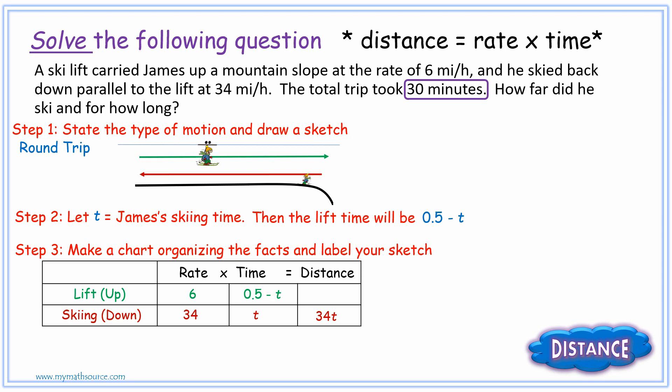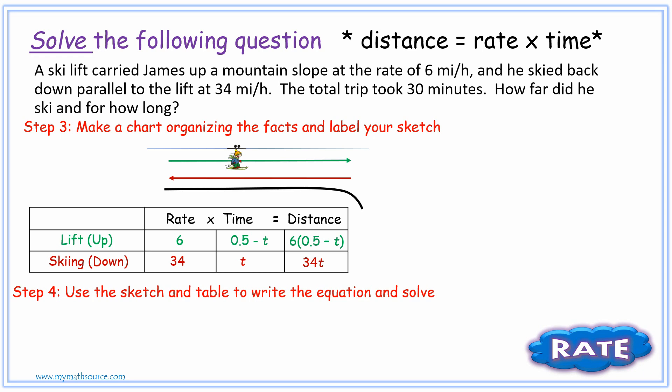Our distance is simply the rate times the time. And we have to be careful here because our time is an expression. So we have to say 6 times the quantity 0.5 subtract T. The order of operations or PEMDAS really comes into play here. Now, we're going to utilize our thinking caps a bit more. We're going to now use the sketch and table to write the equation that will help us to solve for T.